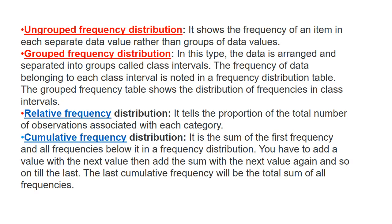From 20 to 29, another class interval, say we have 5 observations. The cumulative frequency should be the previous cumulative total of 10 plus the current interval's value of 5. So 10 plus 5 equals 15, and so on.